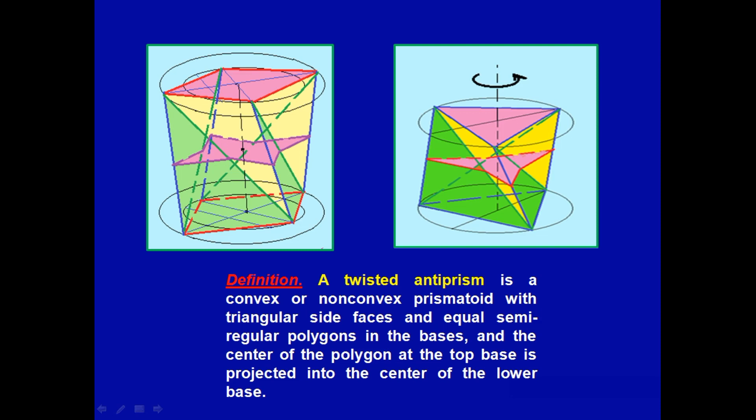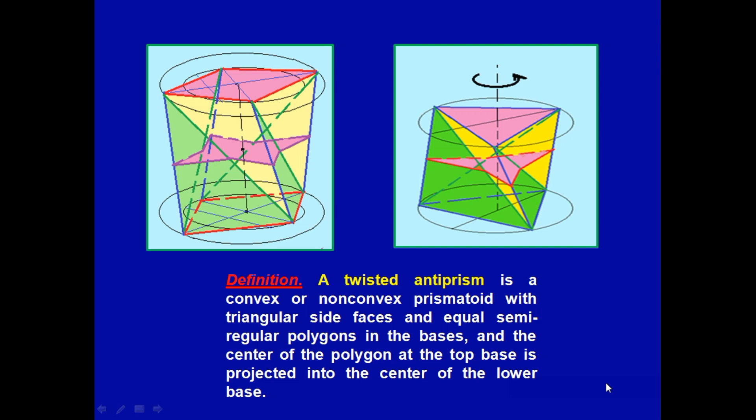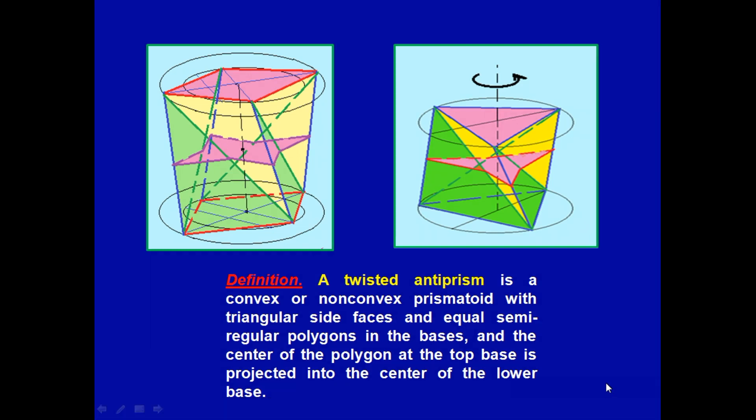Next, a twisted anti-prism is a convex or non-convex prismatoid with triangular side faces and equal semi-regular polygons in the bases, and the center of the polygon at the top base is projected into the center of the lower base.